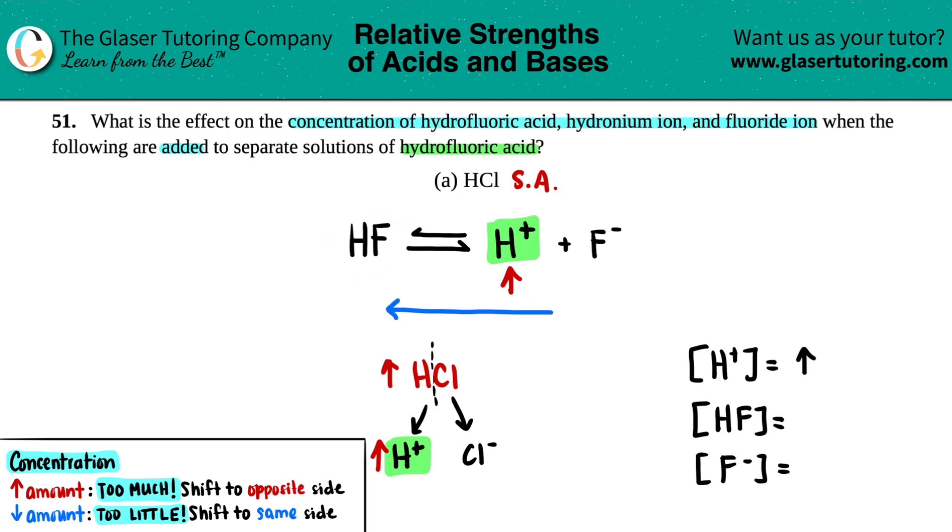And whichever way that you're shifting, that's what you increase. So this would be increasing because you're going that way, you're producing more. And from where you came from, you're going to drop. So HF would increase and the F minus would decrease. You need to decrease this to get more HF. And that's it.